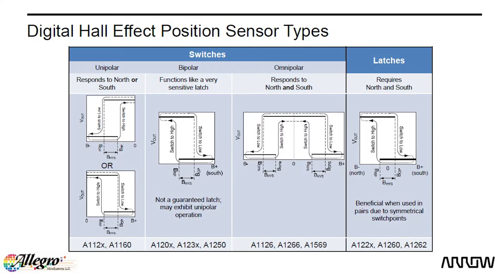Hall Effect sensor switches come in three configurations. Unipolar, which responds to North or South but not to both. The Omnipolar configuration responds to both North and South poles. And the Bipolar configuration, which is different from the others.